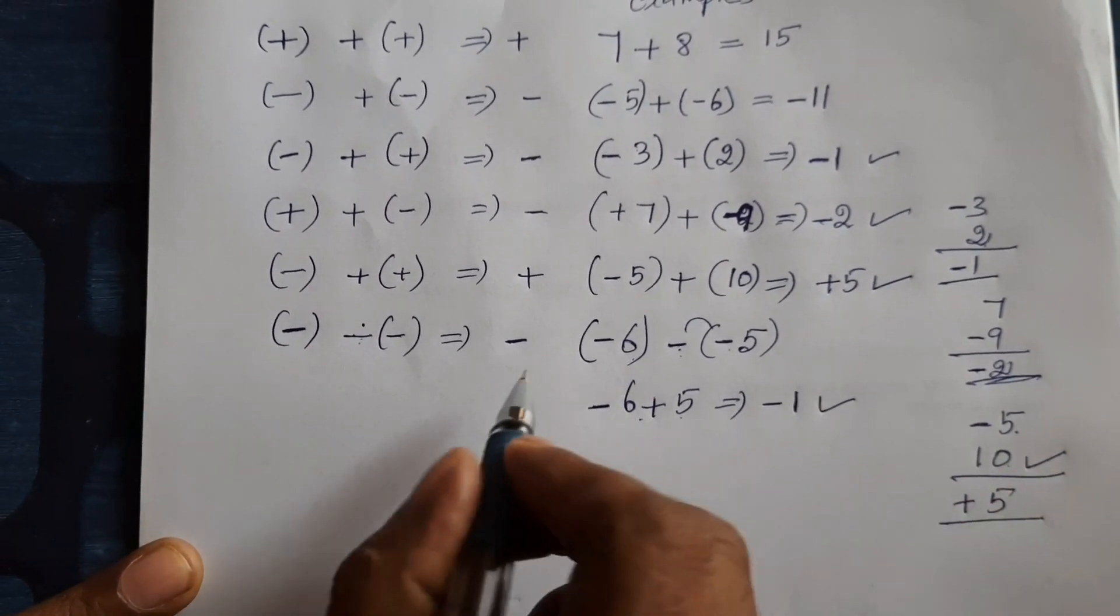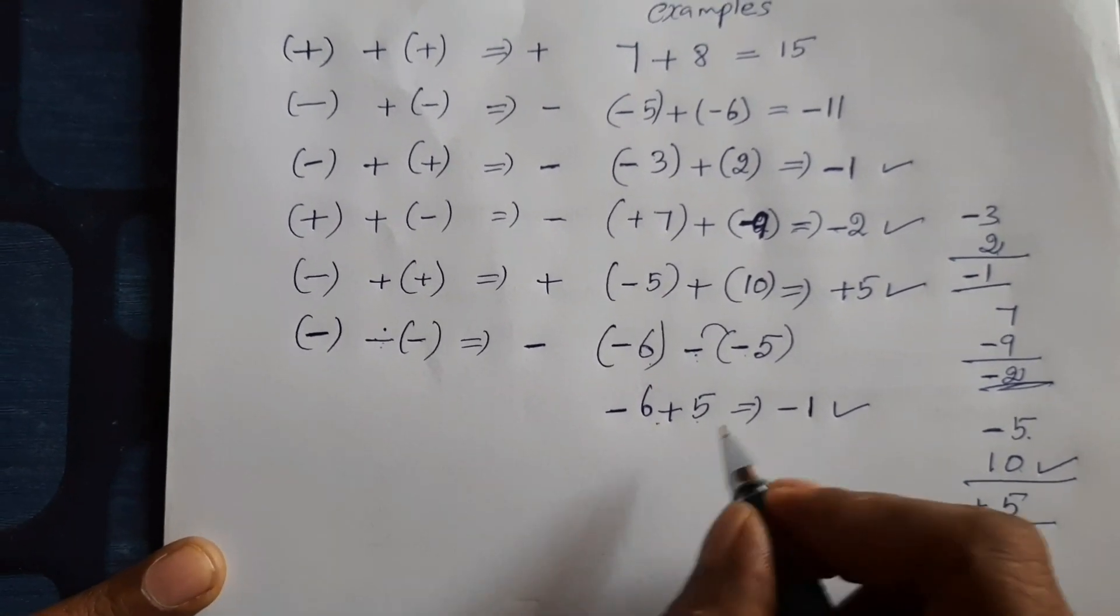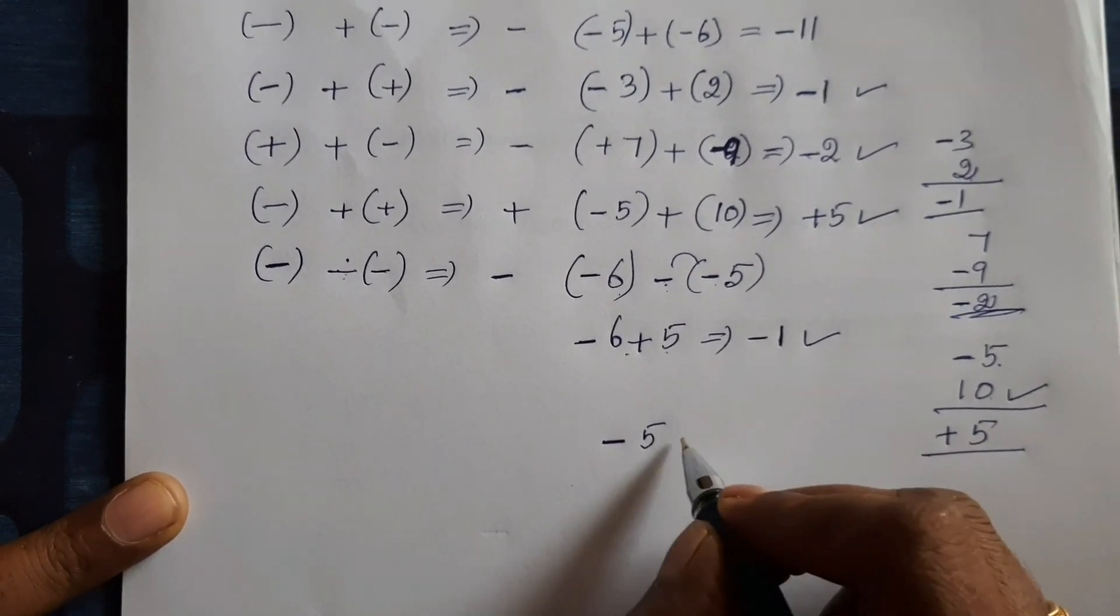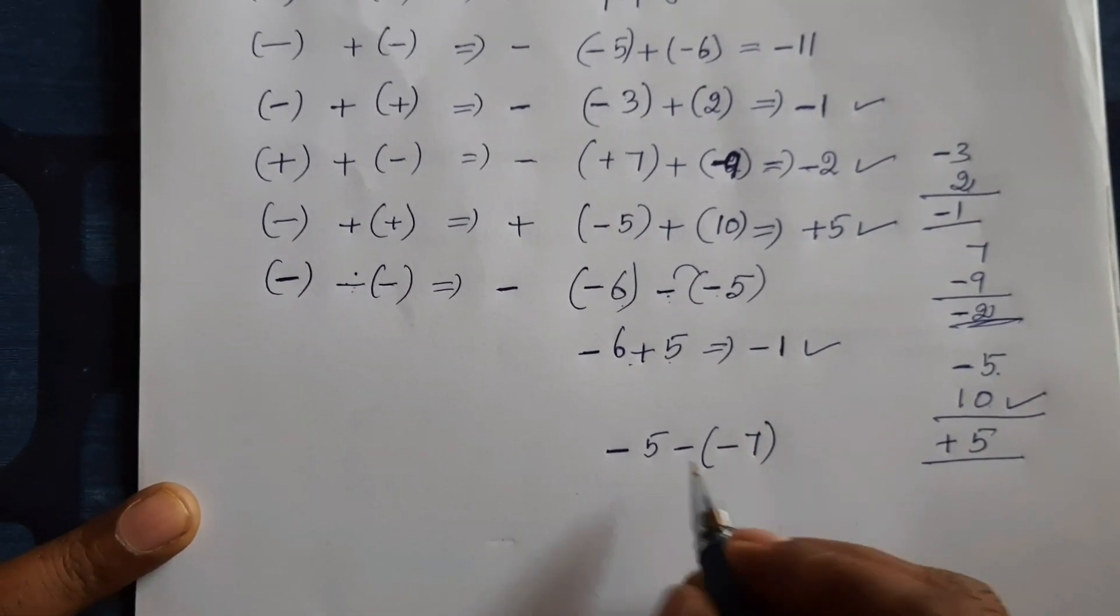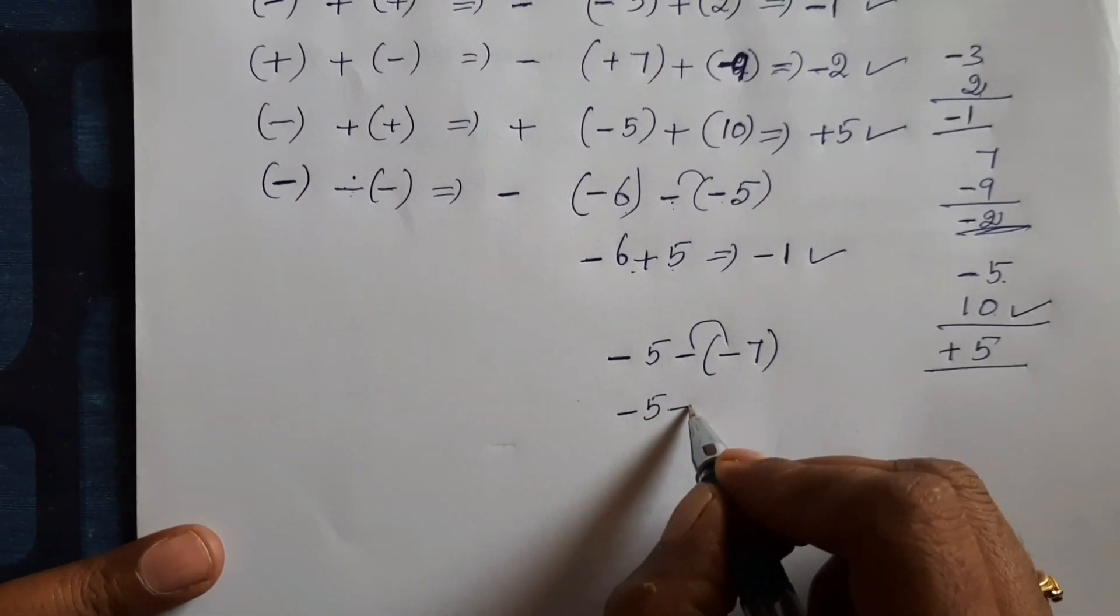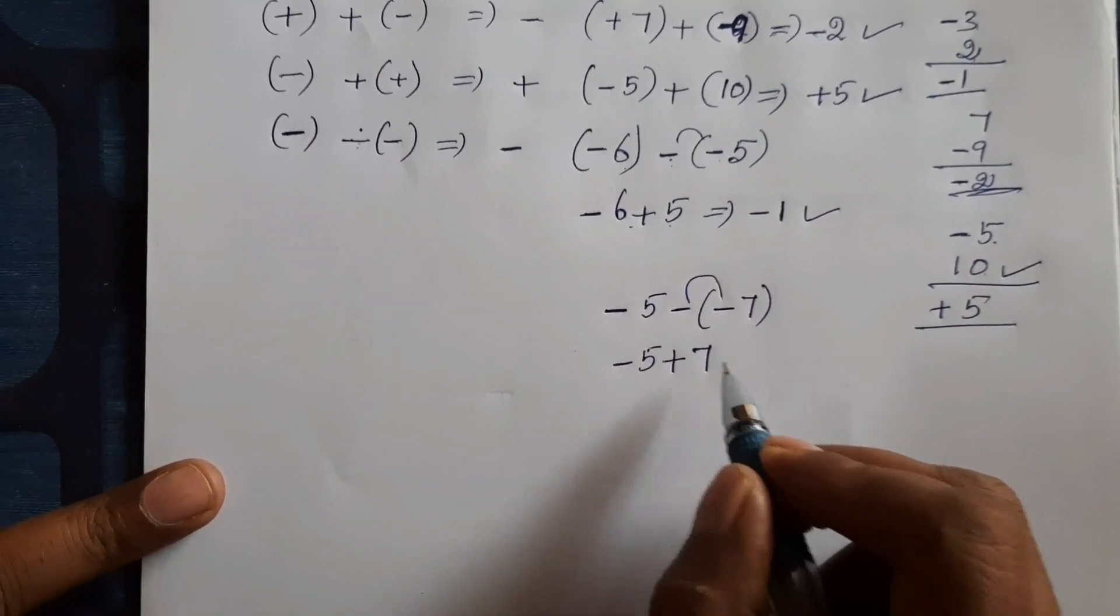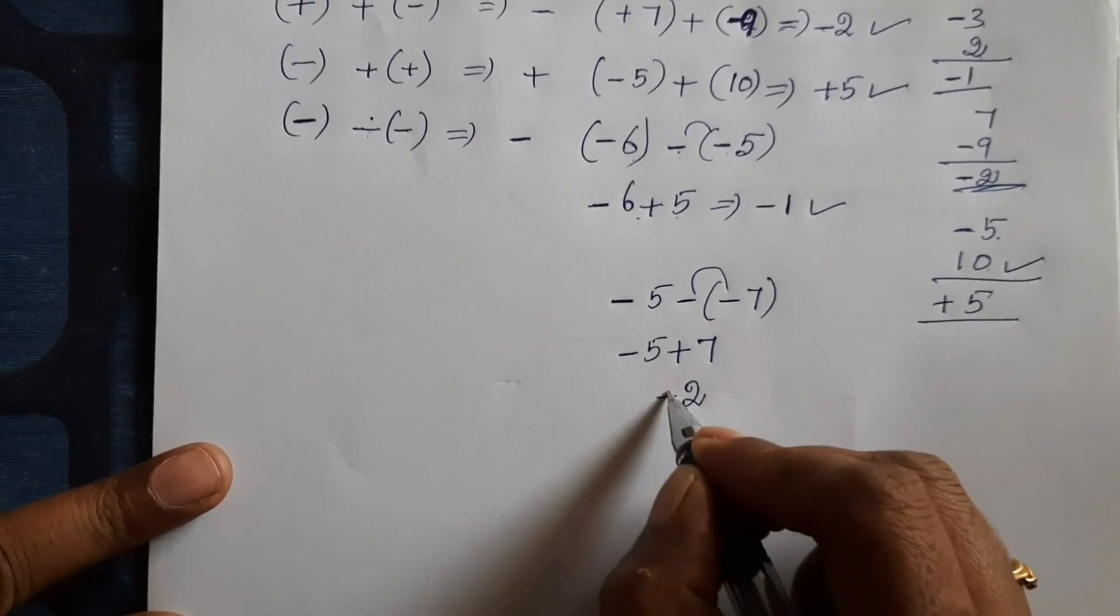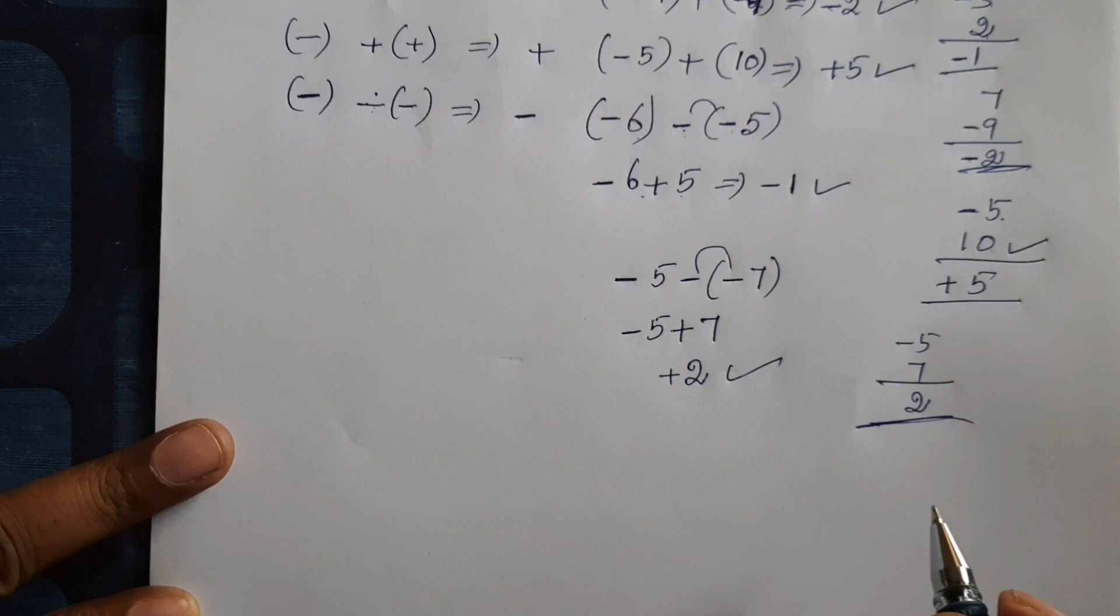That is small number. So get positive number. Now one more example. So minus 5 minus of minus 7. It gives minus 5 minus into minus plus 7. So now you see positive value is more than negative. So we will get positive 2. Minus 5 plus 7. So clear students.